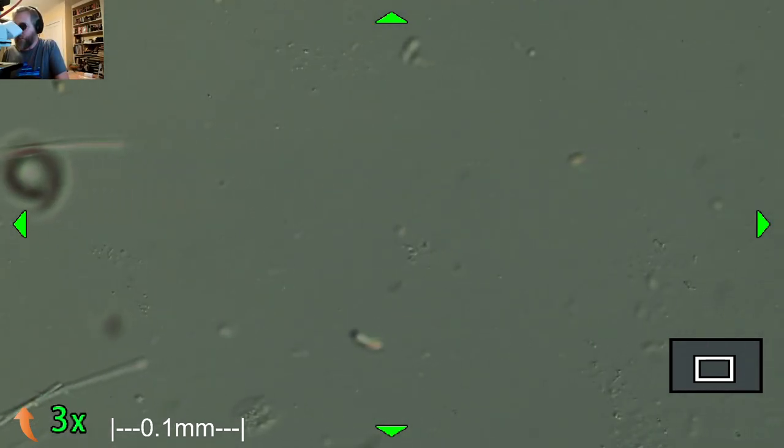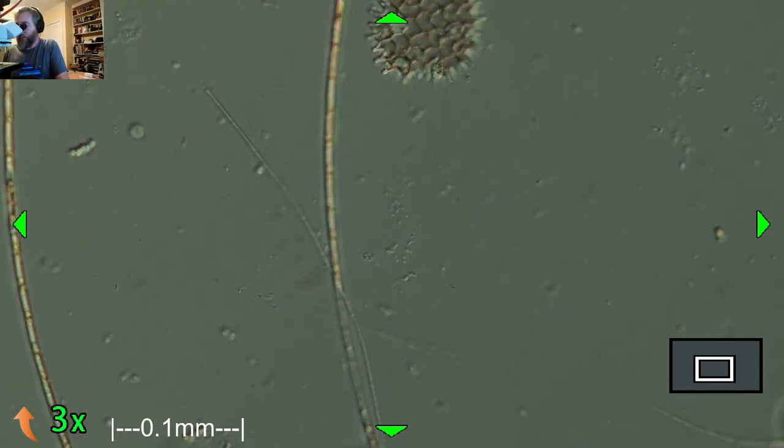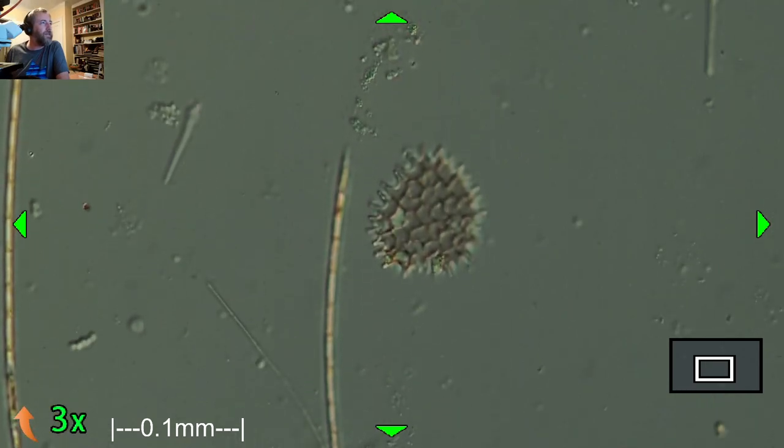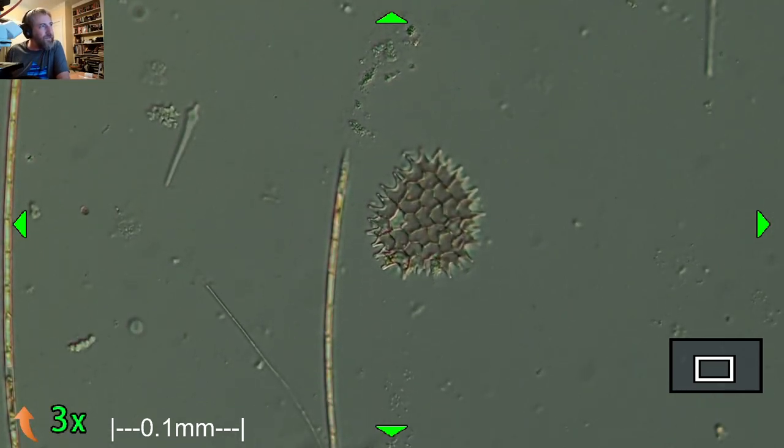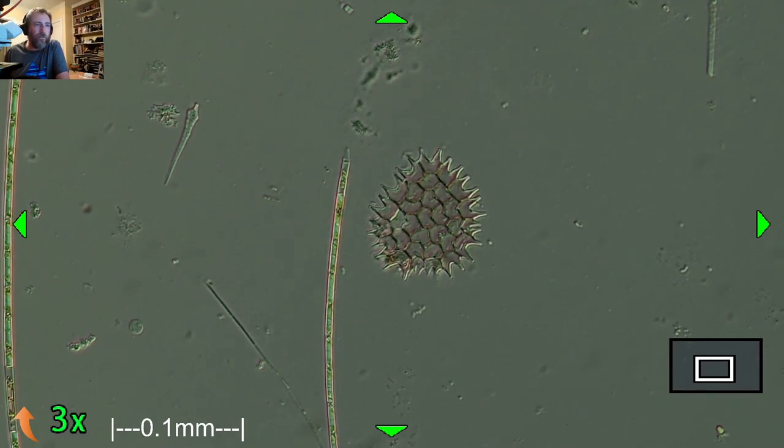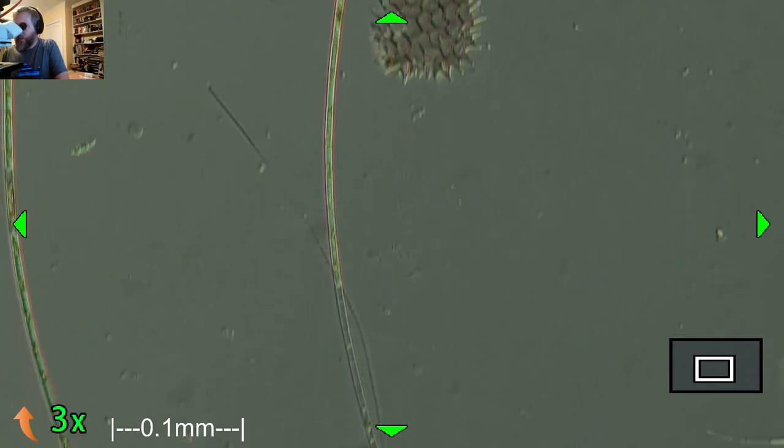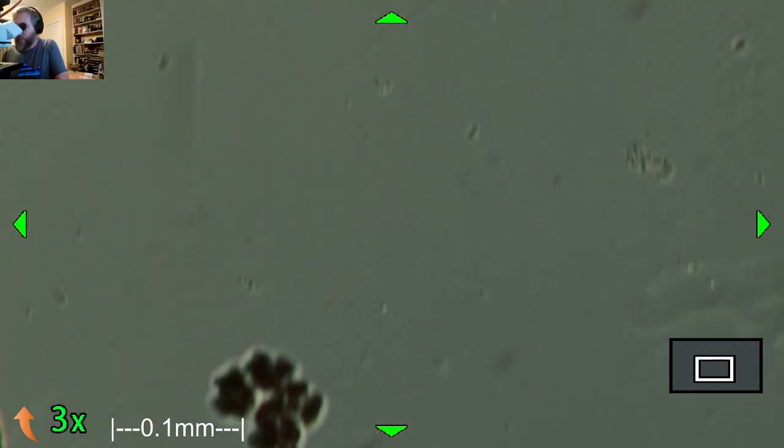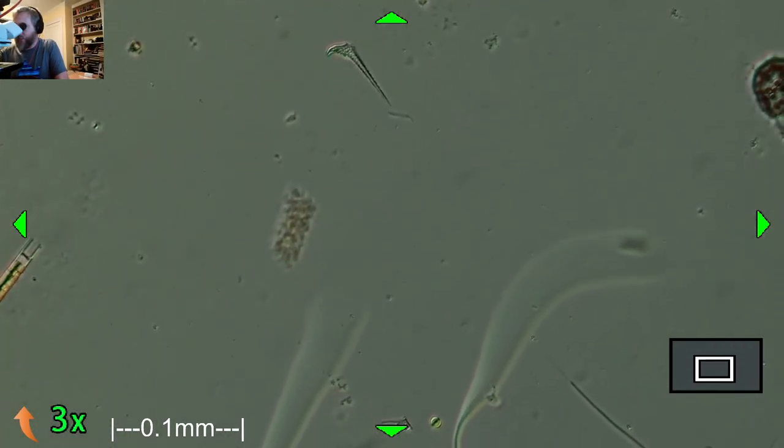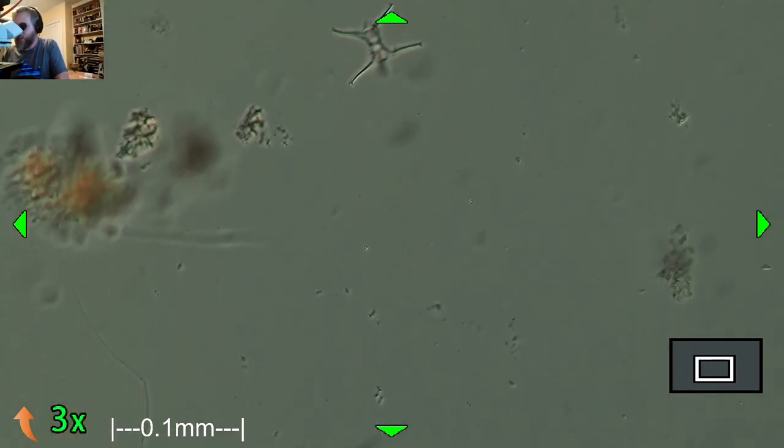And then so there's some Pediastrum. Some of the chloroplasts are missing from it. Right there. So you can see each of the cells has like two little horns, if you want, that come off of them. And then there's a bunch of the Olicacera all around here. Oh, that's a Star Astrum right there. It's a type of desmid.